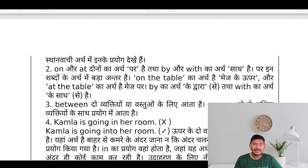Between दो से व्यक्ति और वस्तुओं के लिए आता है, और among दो से अधिक के लिए।